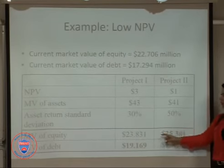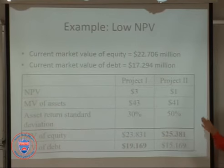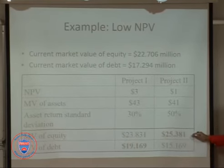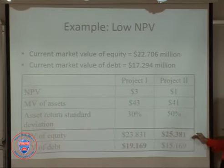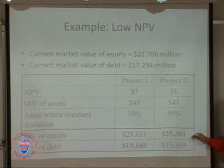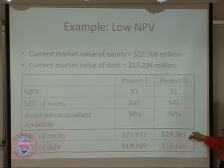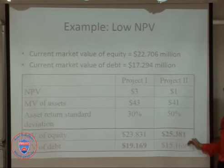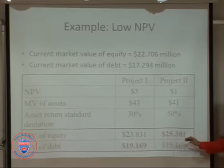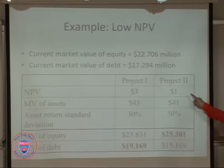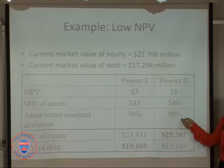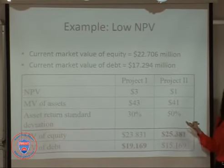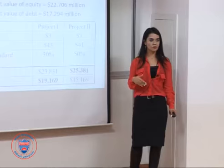Comparing the results, Project 2 — despite having lower NPV — produces a higher market value of equity for stockholders. So stockholders will prefer Project 2, while debt holders will prefer Project 1. Stockholders might prefer low-NPV projects when those projects are riskier, because they like risk — they benefit from upside potential. Debt holders, on the other hand, don't like risk. This is the same agency conflict we discussed.